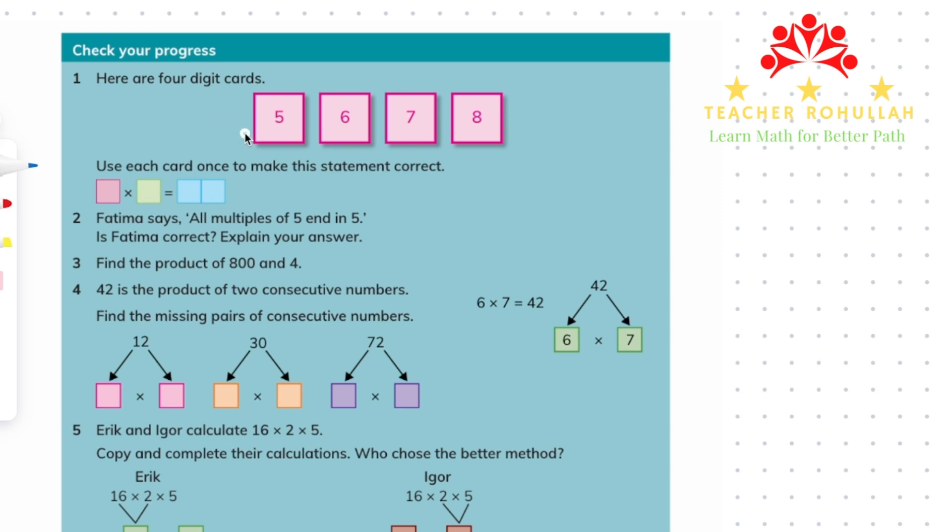To find out we have to first do some calculations and see which numbers go where. So if we multiply five times six, five times six is equal to thirty. So if we put five here and six here we will not have three and zero in the product place. So in this case we cannot use these two.